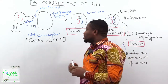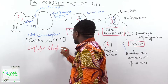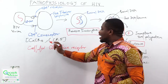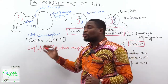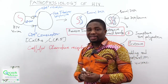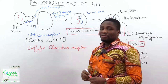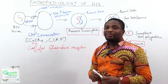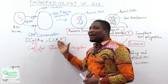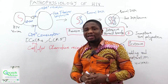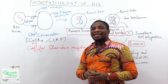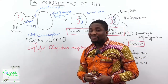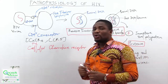CCR simply stands for Cellular Chemokine Receptor. There are two types: CXCR4 and CCR5. These coreceptors have their own affinity. The CXCR4 coreceptor can only be found on T-helper lymphocytes. But CCR5 can be found on all other CD4 cells, like the T-helper lymphocytes, the dendritic cells, the macrophages, and the monocytes.